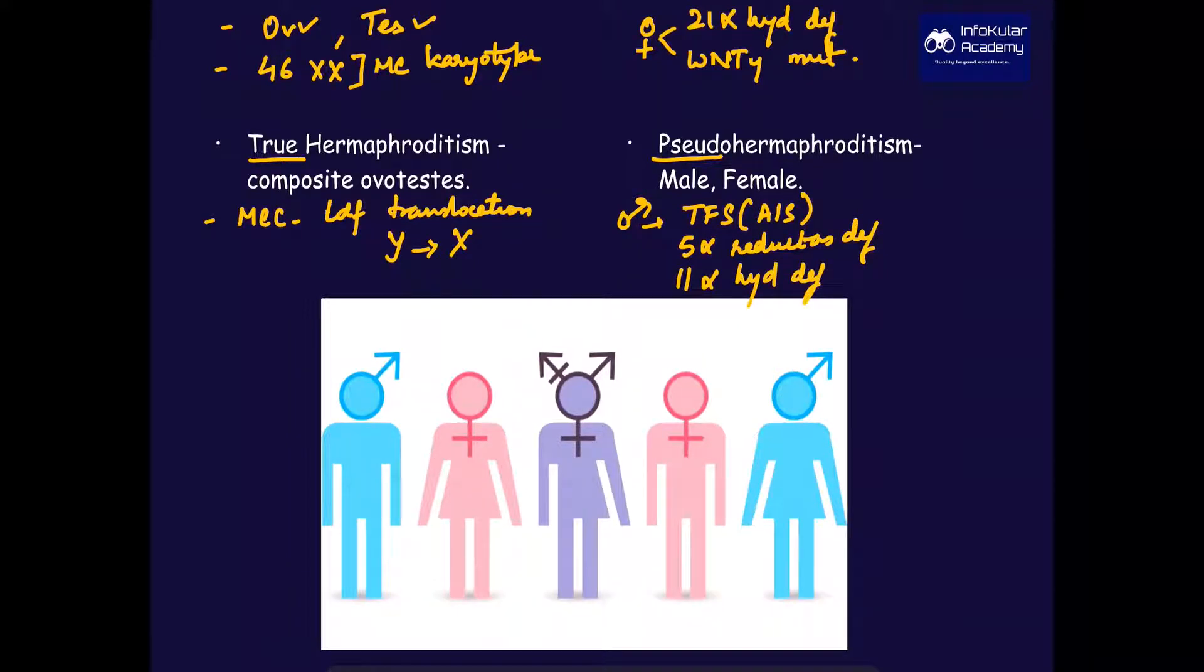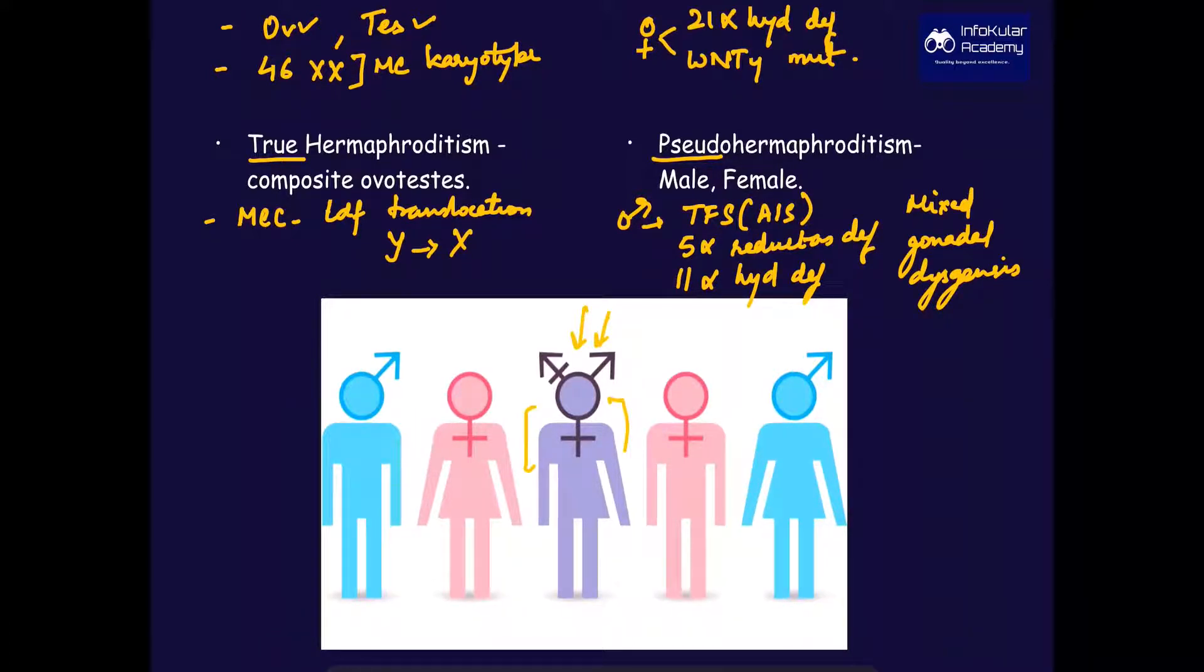Male causes are testicular feminizing syndrome, also known as androgen insensitivity syndrome, 5-alpha reductase deficiency, 11-alpha hydroxylase deficiency, and an entity called mixed gonadal dysgenesis. In this diagram, the purple one reflects true hermaphrodite whereas the ambiguity of pseudohermaphroditism is represented.